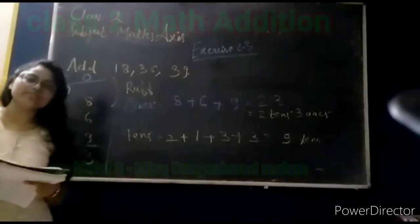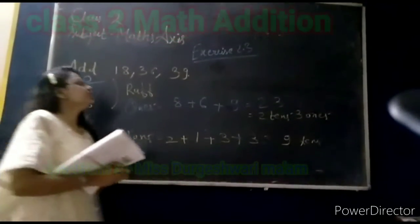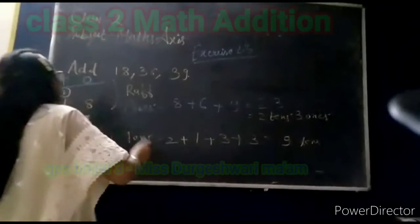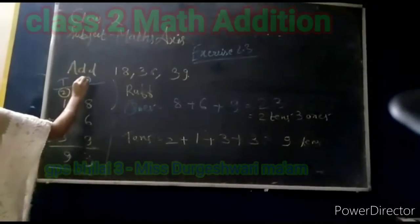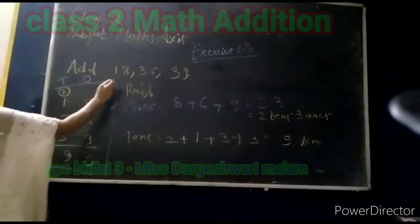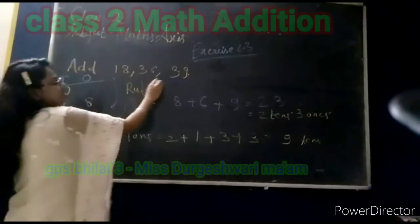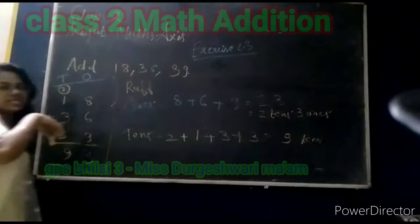Exercise 2.3 of unit 2. Add 18 plus 36 plus 39.